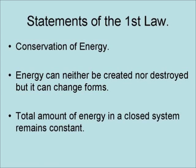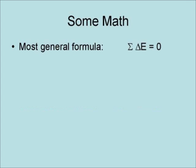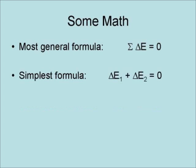It can also be stated that the total amount of energy in a closed system remains constant. There are several ways in which the first law of thermodynamics can be expressed mathematically. The most general expression of the first law would be that the sum of all changes in energy equals zero. The simplest possible expression of this is that the change in energy form one plus the change in energy form two equals zero.